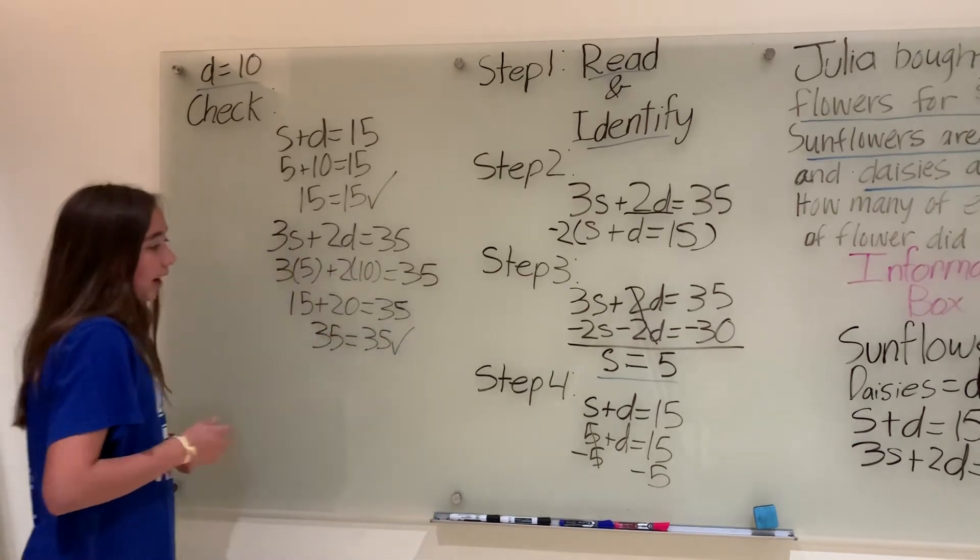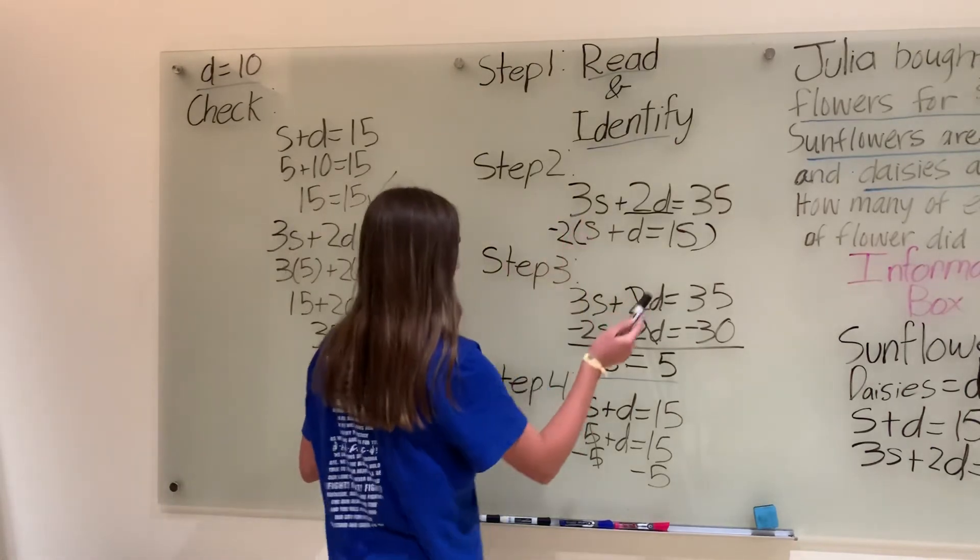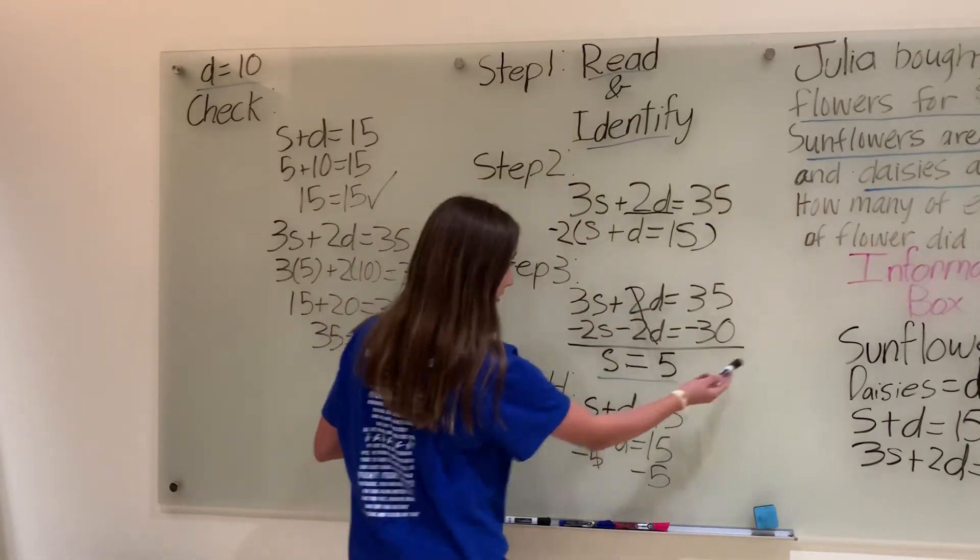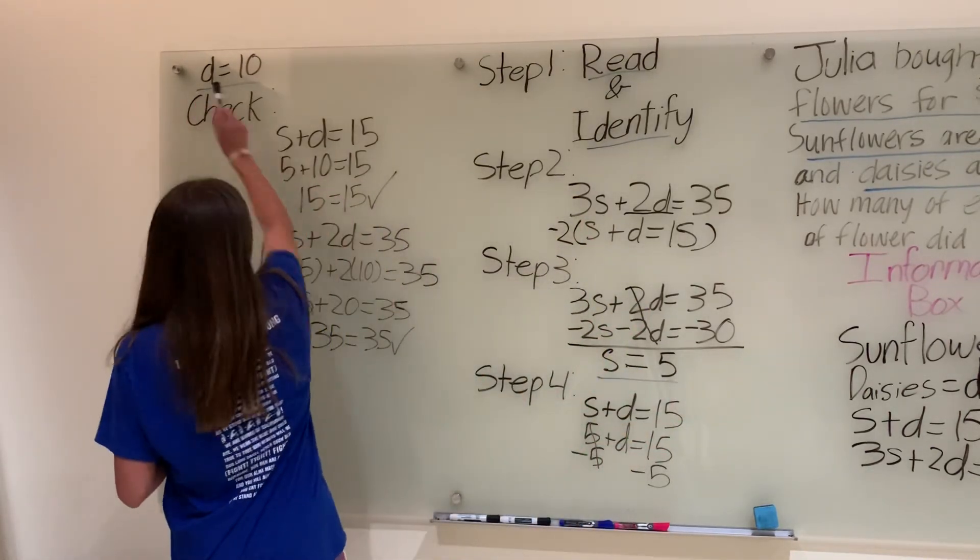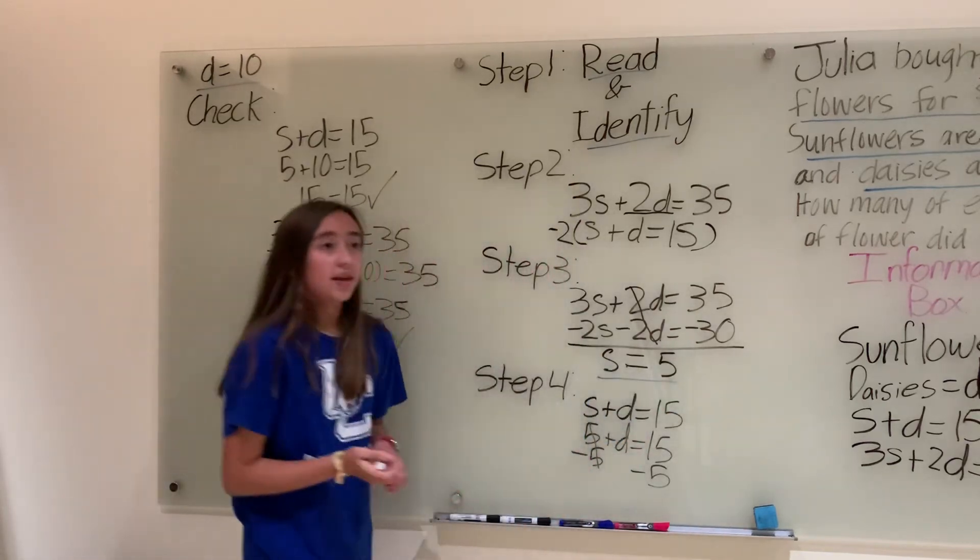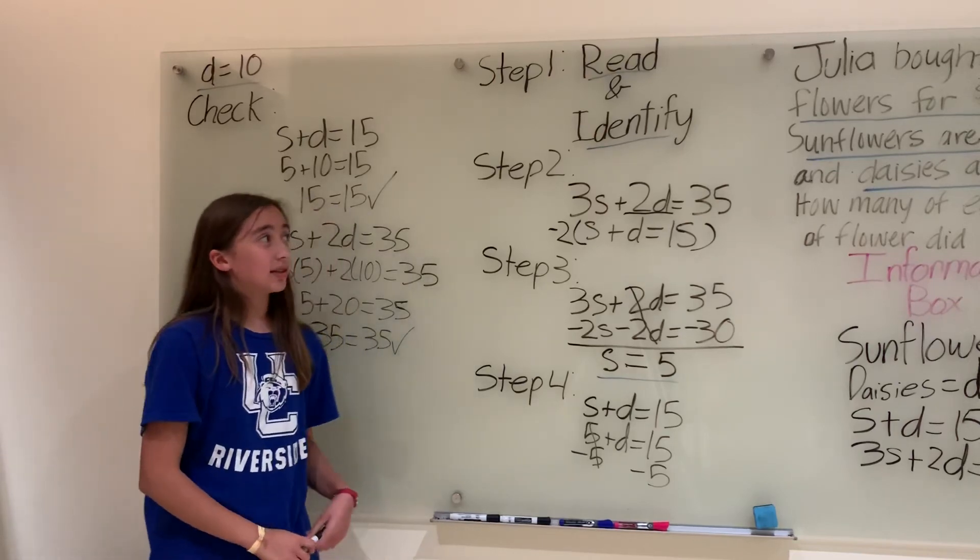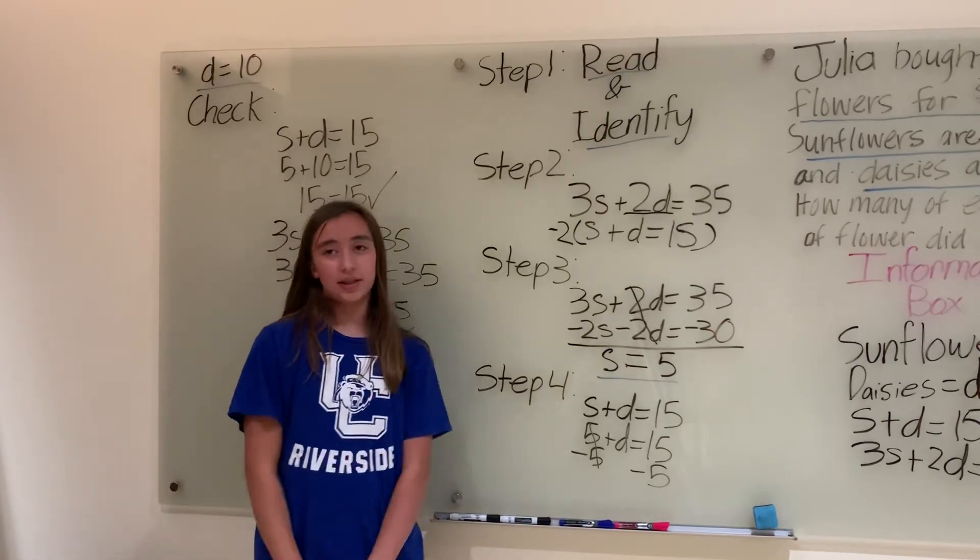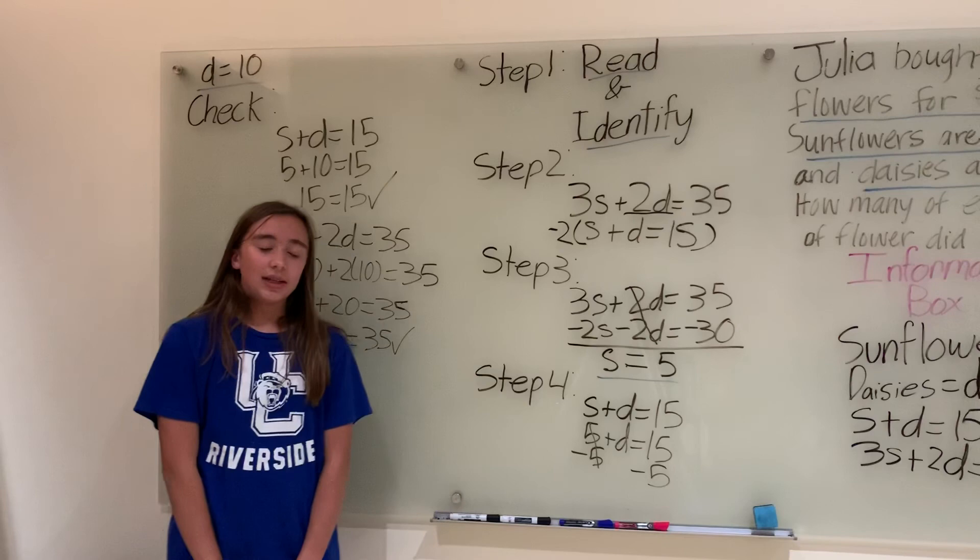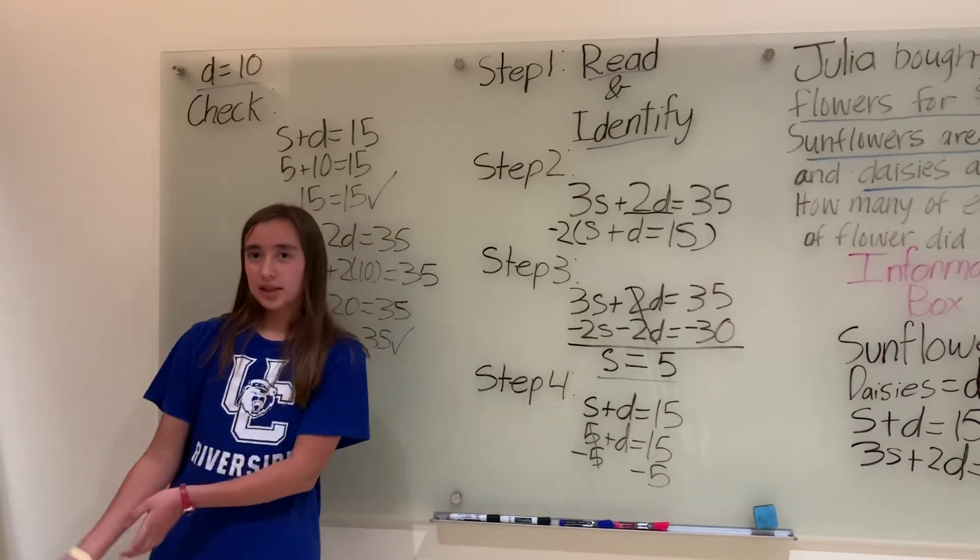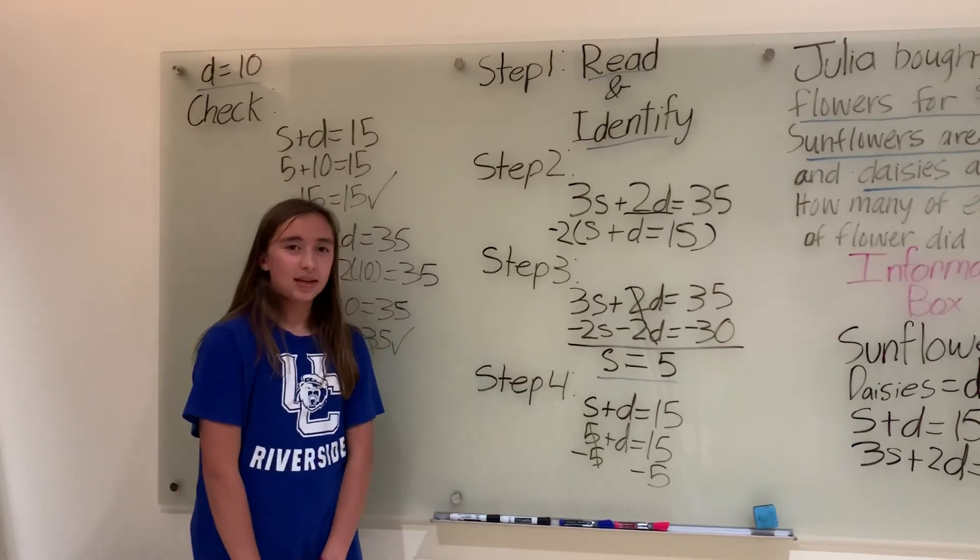And now our final answer is Julia bought 5 sunflowers and 10 daisies. Thank you for watching everyone, and that's the end of this video. You just learned how to solve a system of equations using elimination. If you have any videos that you will teach us how to do something, please share it. Bye.